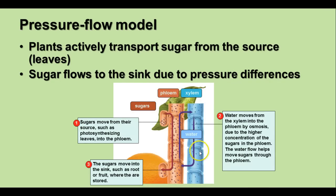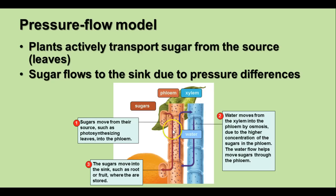This transport is described by the pressure flow model. In this model, the plant actively transports sugar from the source — the leaves — to a sink, which is where sugars are stored, such as in a fruit, root, or other part of the plant. This also involves adding water by osmosis, because there's a higher concentration of sugars in the phloem than in the xylem, causing water to diffuse across into adjacent phloem cells, making the fluid flow more easily to the sink. This concludes the lesson on plant cells, tissues, and organs.